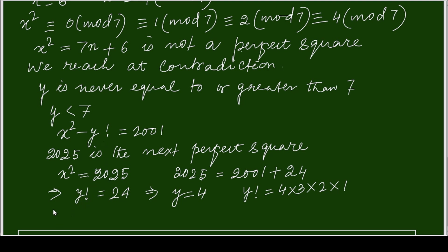So y is 4 factorial. Then what will be x square? x square is equal to, as we have taken, this is the perfect square. It is plus 45 square and minus 45 square. So this is the value of x. x equals to plus minus 45 and y is equal to 4.